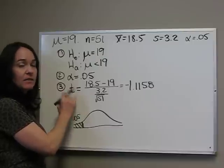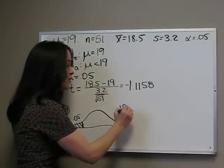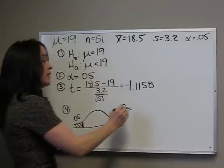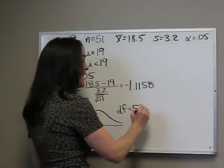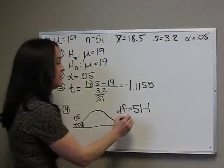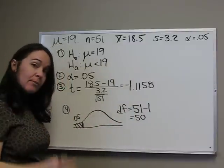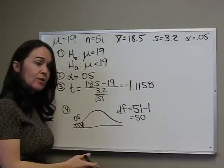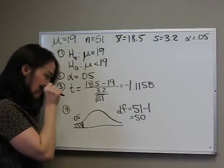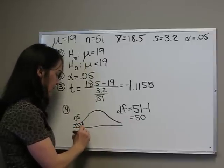Since we're doing a t-test, we're going to look at our t-table. The t-table says we have to know our degrees of freedom. The degrees of freedom is n minus 1. In this case, n is 51, so our degrees of freedom is 50. So, we look at our table for 50 degrees of freedom across to .05, and you should get 1.676.